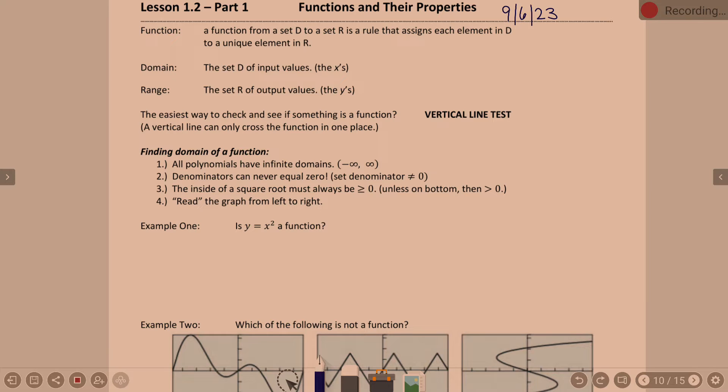For today though, we're talking about how to know if something is a function, domain, and range. We'll go into other stuff in Part 2. So a little bit of definition here. Function: a function from a set D to a set R is a rule that assigns each element in D to a unique element in R, where D and R stand for domain and range.